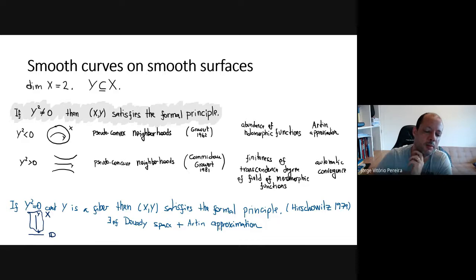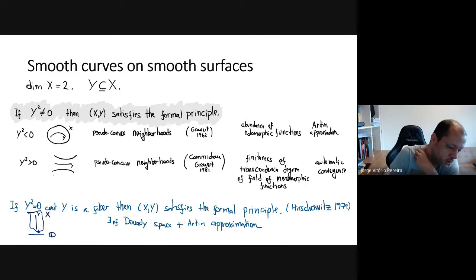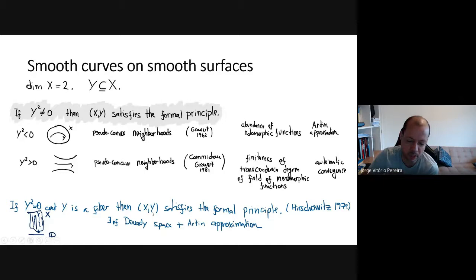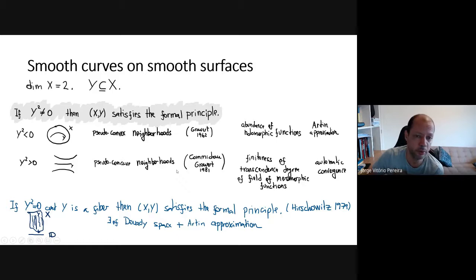Let me recall Artin approximation quickly for those who don't remember it. We have a system of analytic equations F(X, Y) — F has analytic equations in two sets of variables X and Y — and we assume we have some formal solution to this set of analytic equations. Then this solution can be approximated up to arbitrary order by a convergent solution. That's the Artin approximation I'm talking about.